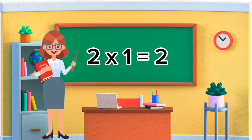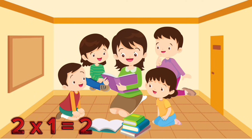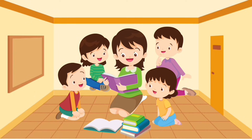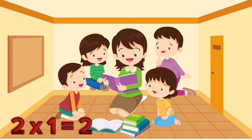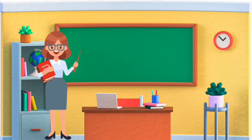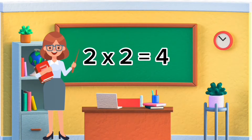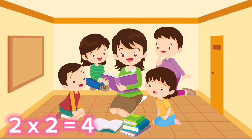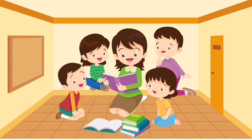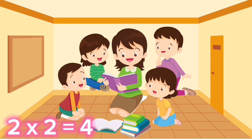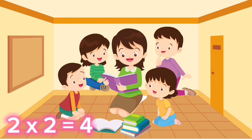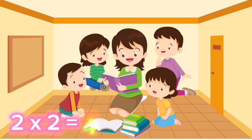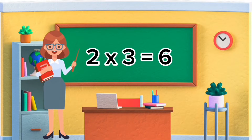Two ones are two. Two ones are two. Two twos are four. Two twos are four.